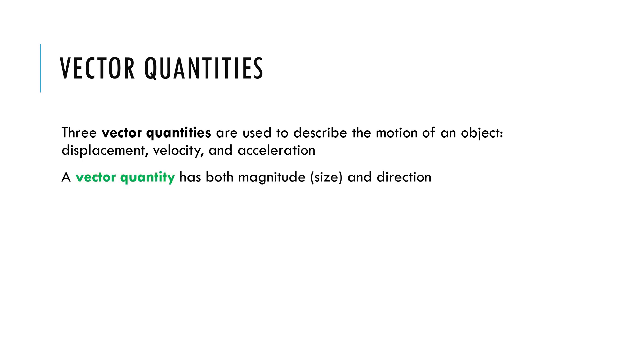All right, so as a recap of vectors, what does that mean? The vectors that we're going to be talking about are displacement, velocity, and acceleration. Those are really the three things that you need to describe what something is doing in terms of an object moving. And when we say a vector, you want to remember this important definition because vectors are all over physics. They're everywhere.